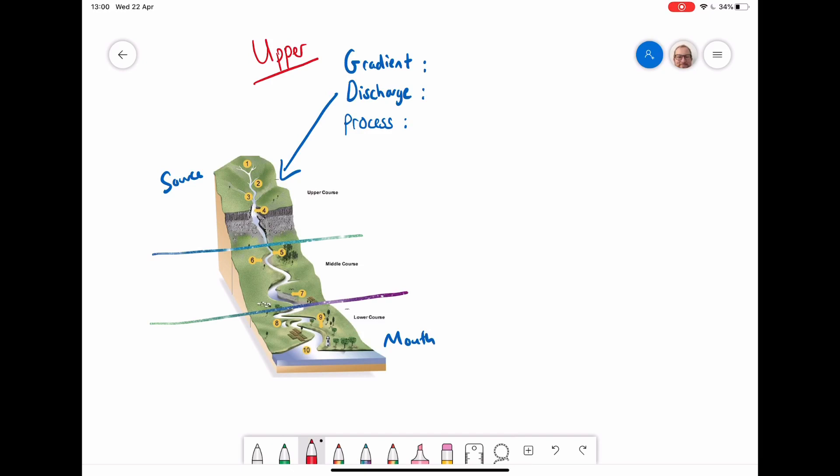So we can see in the upper course the gradient here is very steep. Because the river is near the source and it hasn't had many tributaries adding volume of water into the main channel, the discharge therefore is very low. Because the gradient is so steep and not much water has gained into the river yet, the river actually erodes downwards in what we call the process of vertical erosion.